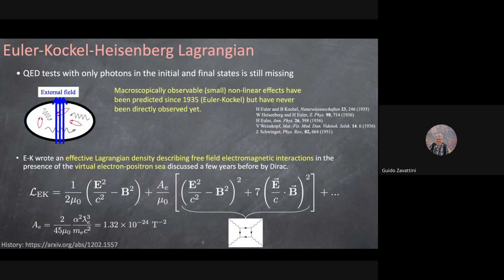In the 1930s, Euler and Kockel — two students of Heisenberg — calculated the first correction to the classical Lagrangian due to the existence of virtual electron-positron pairs. This correction introduces a four-photon interaction in vacuum — a term that is quartic in the fields. This is of particular interest because nobody has yet verified QED with only real photons in both input and output. The parameter governing this four-field interaction is approximately 10⁻²⁴ T⁻², making the effect extraordinarily small.